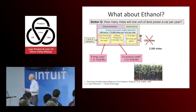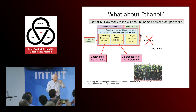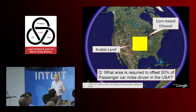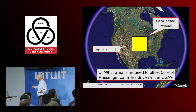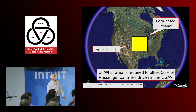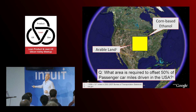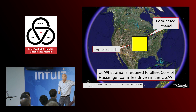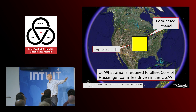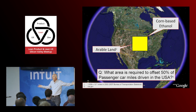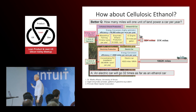Using the proponents' own numbers, you get about 2,300 miles per acre driving on corn ethanol. We thought: maybe the farmers will just grow all the fuel we need. But this is the amount of arable land in America — if you plant it all in corn, you could offset only half the driving in America, assuming it's energy positive. So you'd have to import 100% of our food. That's not going to happen — we're not going to give up our entire food supply.